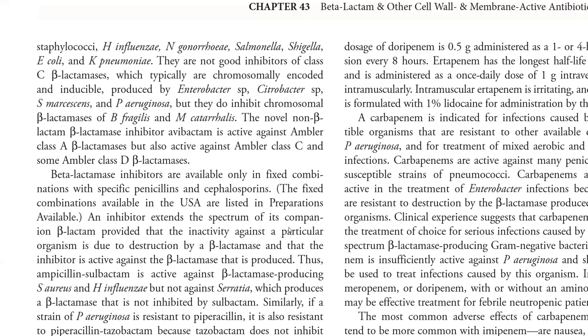Class C beta-lactamases are typically chromosomally encoded and inducible. Class A beta-lactamases were plasmid-encoded, but Class C are encoded through chromosomes and produced by Enterobacter species, Citrobacter species, Serratia marcescens, and P. aeruginosa. However, these inhibitors do inhibit the chromosomal beta-lactamase of B. fragilis and M. catarrhalis, though others cannot be inhibited.